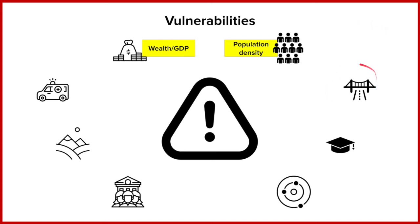The next one is infrastructure — that could be the road network, gas, electricity, and key services such as hospitals. Infrastructure links back to wealth: wealthier HICs are more likely to put money into developing infrastructure that can resist hazards, such as earthquake-proof bridges and hospitals that can flex with an earthquake. Poorer countries struggle with that. Infrastructure also allows emergency services to get to the hazard quicker, and if roads buckle or get covered in debris, emergency services are going to struggle to get there in time.